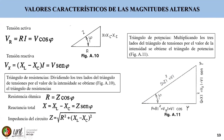Asimismo, tenemos el triángulo de potencia: multiplicando los tres lados del triángulo de tensiones por el valor de la intensidad se obtiene el triángulo de potencias, donde la potencia activa puede obtenerse por resistencia por intensidad, voltaje resistivo por intensidad, o voltaje por intensidad por coseno del ángulo. En este triángulo, la potencia activa siempre se mantiene constante; la que varía es la potencia reactiva de acuerdo al consumo de reactivo del circuito, y la potencia aparente es el resultado de la potencia activa y el consumo de potencia reactiva.